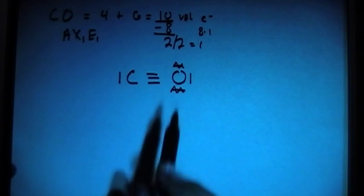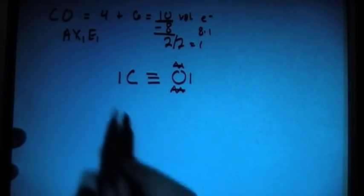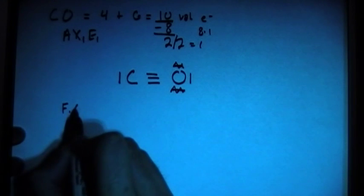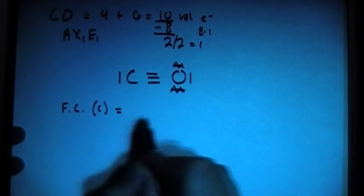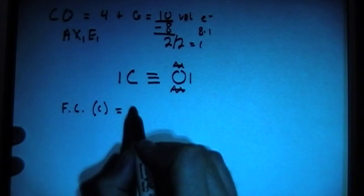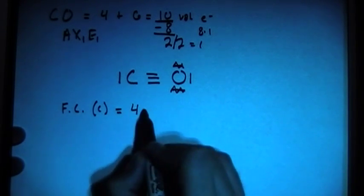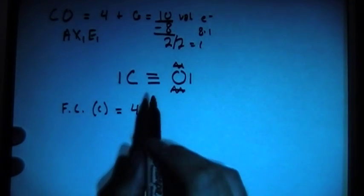So this should be the right Lewis structure. So let's go ahead and check the formal charges. So we can check the formal charges on, let's go carbon first. And remember, a formal charge is the number of valence brought in, so that's 4.